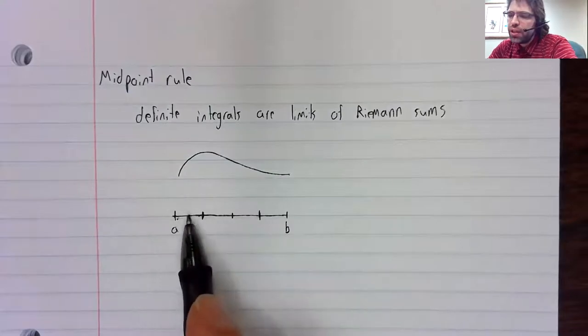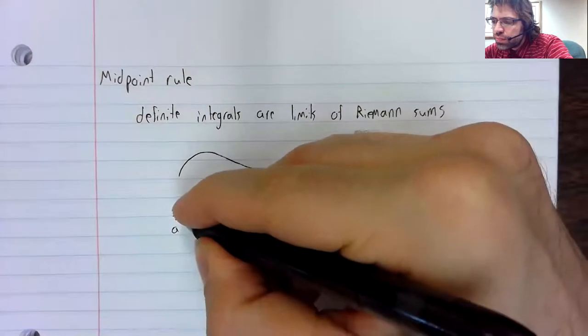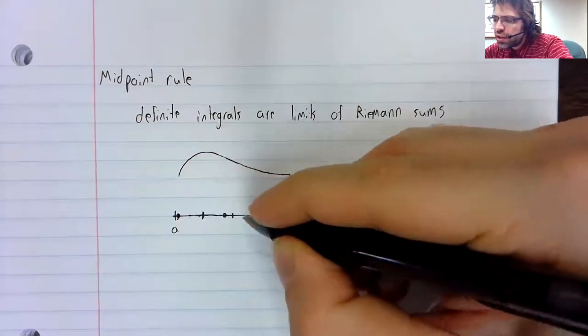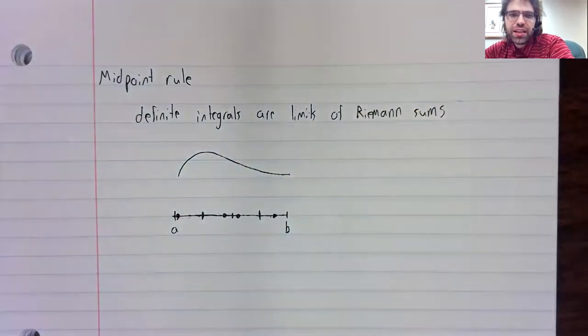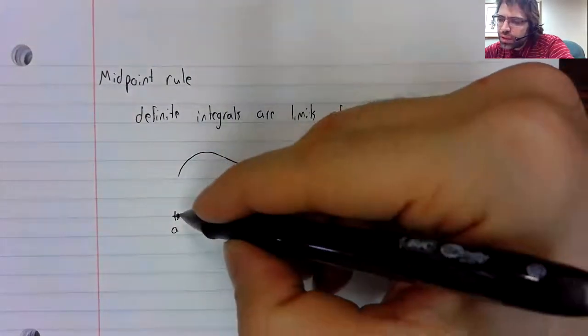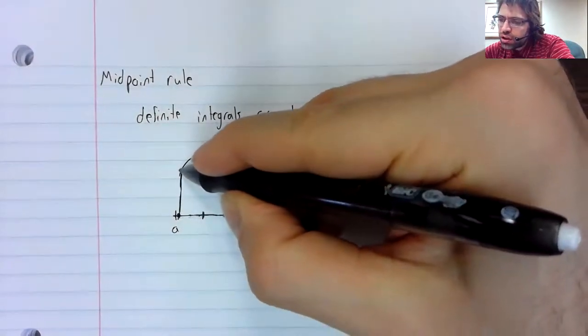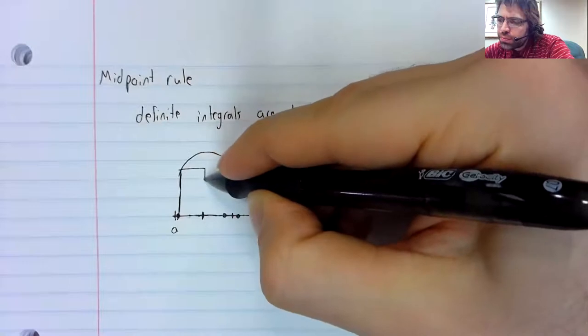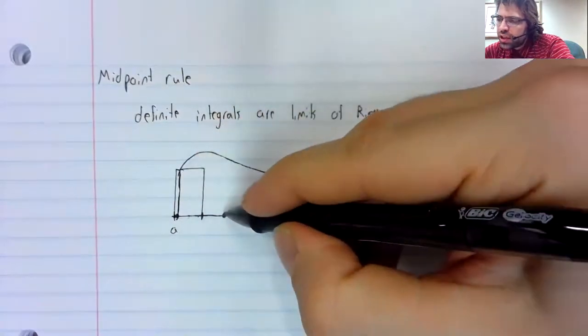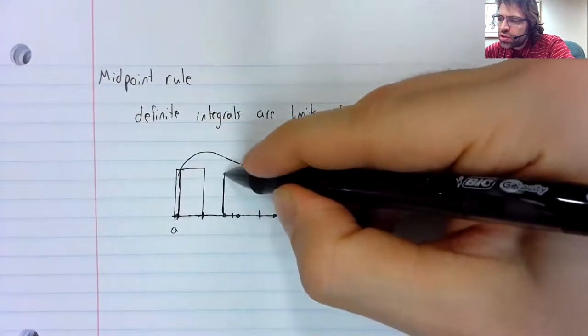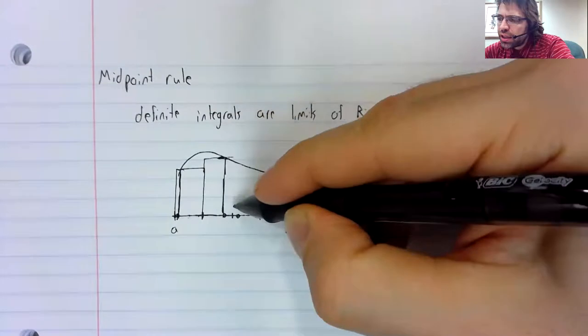In each of these pieces, you select a point. Could be any point. And you go up until you hit the curve. And then you create a rectangle.